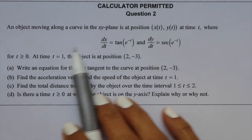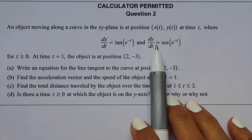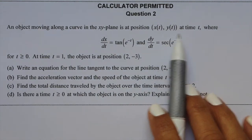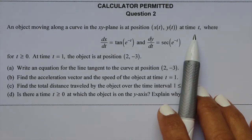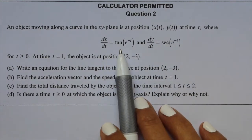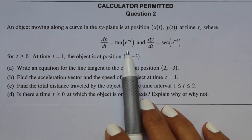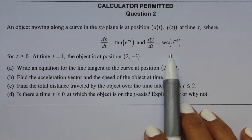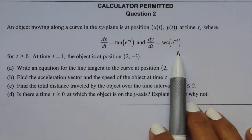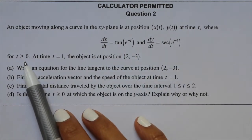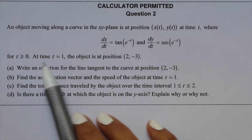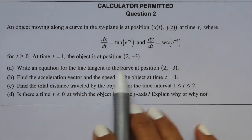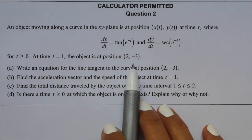An object moving along a curve in the x-y plane is at position x(t), y(t) at time t, where dx/dt is tangent of e to the negative t, and dy/dt is secant of e to the negative t. t is greater than or equal to 0. At time t equals 1, the object is at position (2, -3).